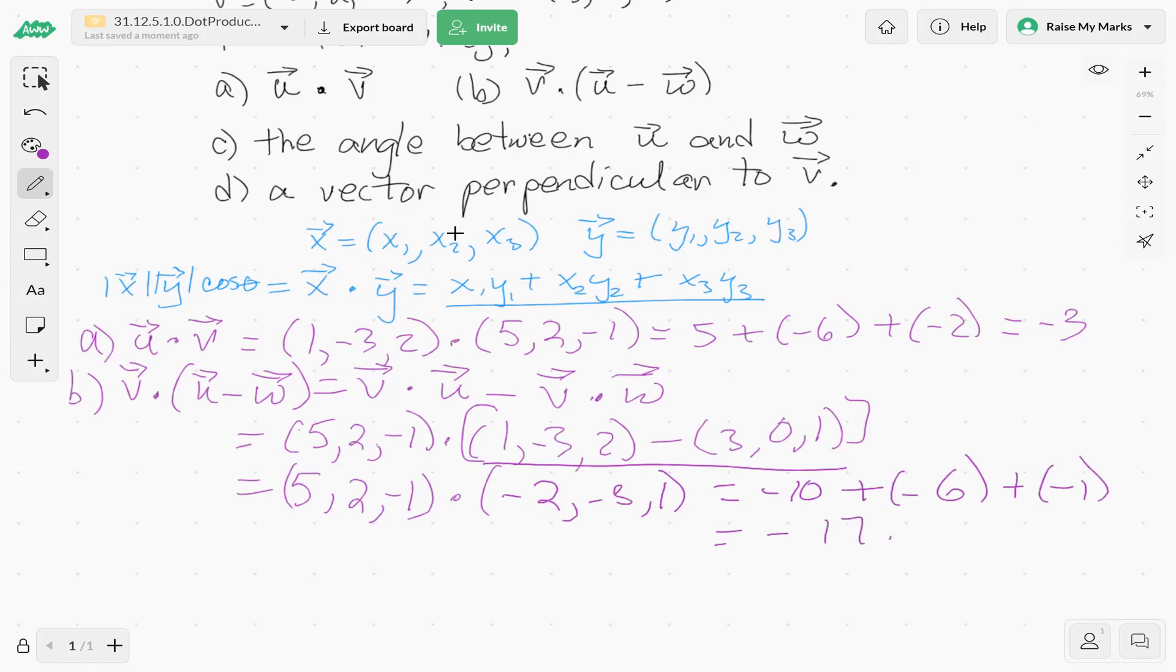Excellent. Okay, now we want the angle between u and w. So now we're going to use both definitions. Put them together. All right, so let's do that. So first, we need the dot product of u and w. So let's do that, u and w.